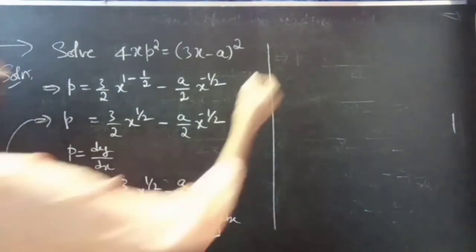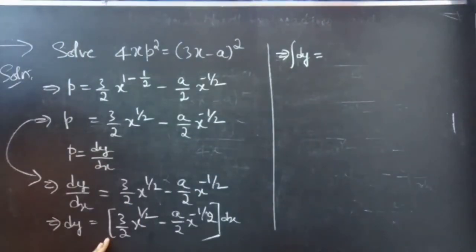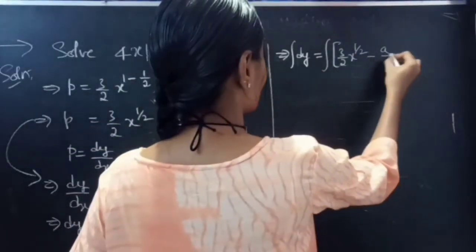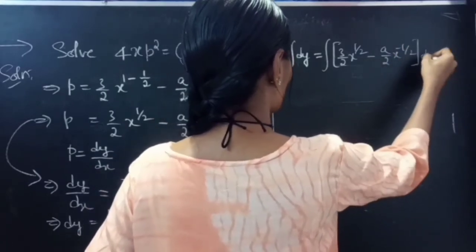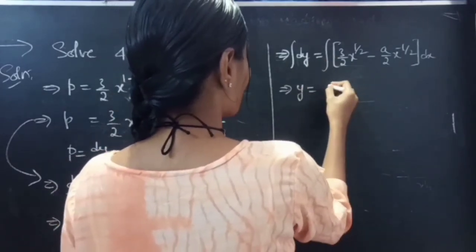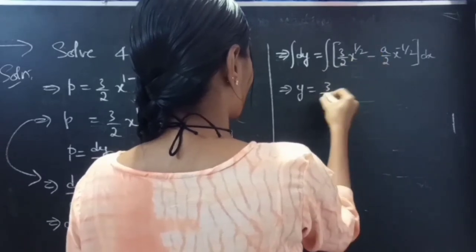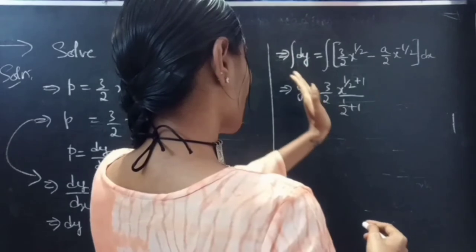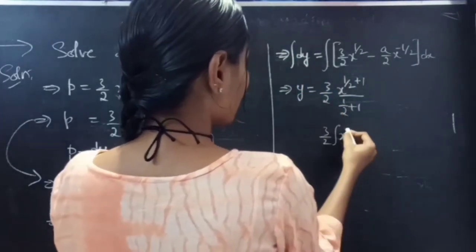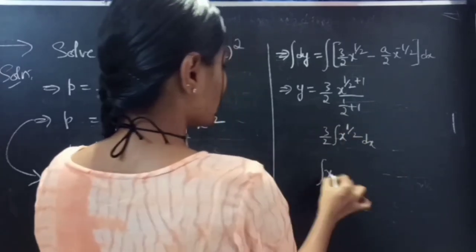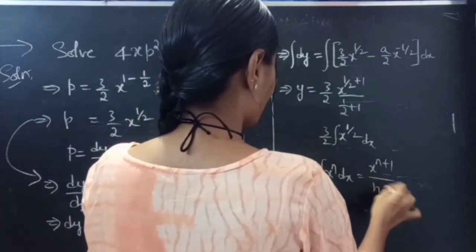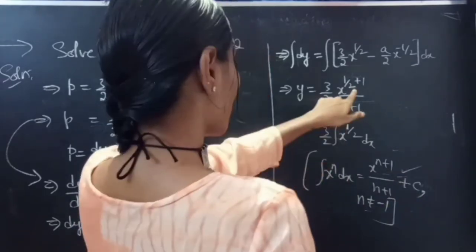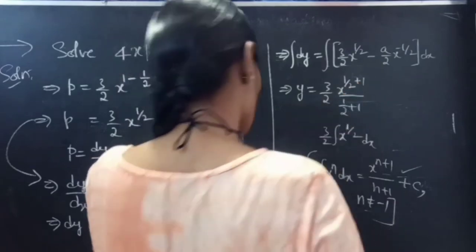Now we integrate both sides. Integral of dy equals integral of (3/2 · x^(1/2) minus a/2 · x^(−1/2)) dx. We use the formula: integral of x^n dx equals x^(n+1)/(n+1) + c, valid for n ≠ −1. Here n = 1/2 ≠ −1, so the formula applies.